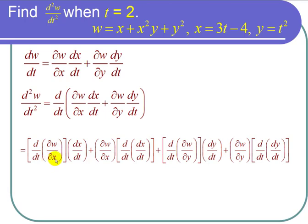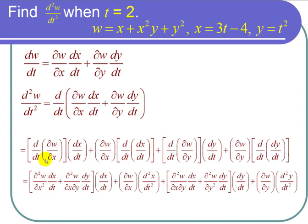To find d over dt of del w over del x, I use the chain rule again. That gives del squared w over del x squared times dx over dt, plus del squared w over del x del y times dy over dt. Then there's still the dx over dt, plus del w over del x times d squared x over dt squared.